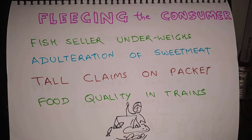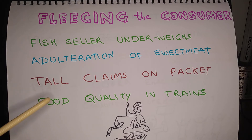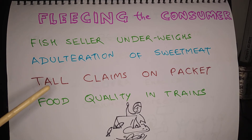Another example is food adulteration, which is especially prevalent among sweet meat sellers. Shops selling gulab jamun, barfi, or rasmalai often adulterate the ingredients, and you may end up consuming a spurious quality sweet dish. Another example is of making tall claims on packets — for example, a milk supplement claiming that drinking it will make you grow taller, stronger, and even more intelligent.